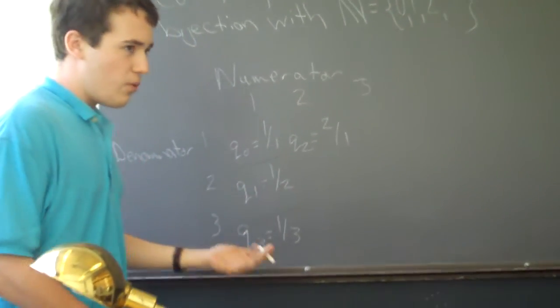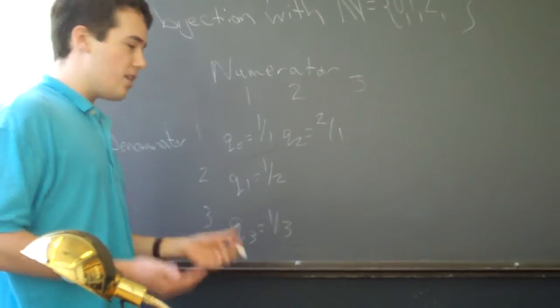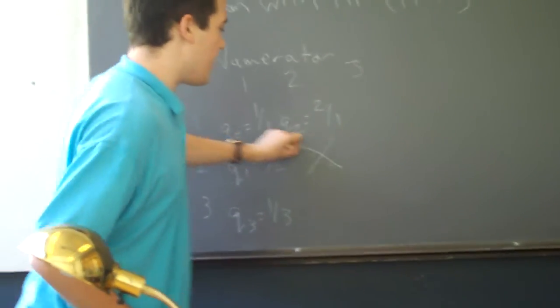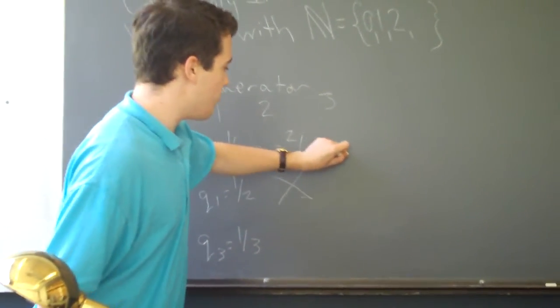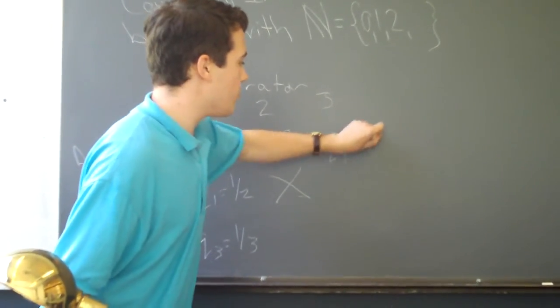So, at those points at which the fraction is not in lowest terms, we can simply write an X or something of that sort. And then continue on, Q4 equals 3 over 1.